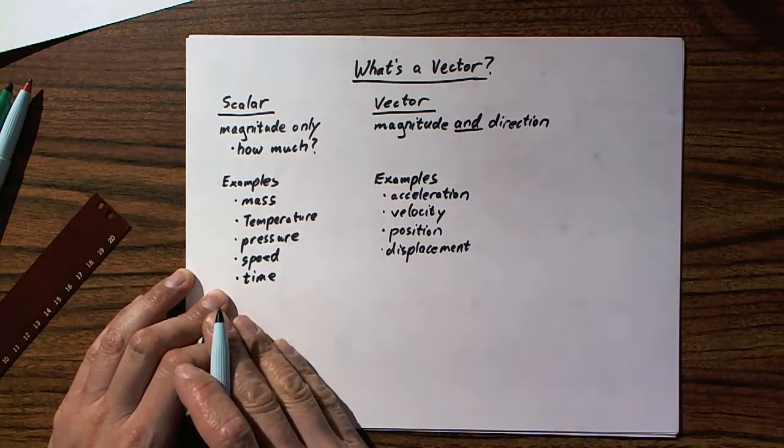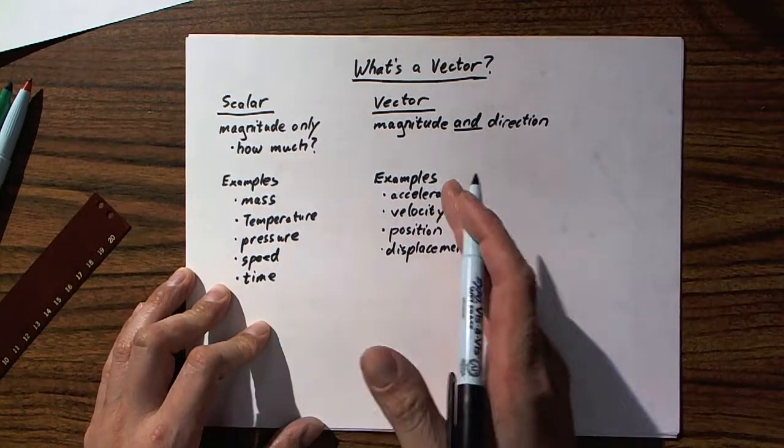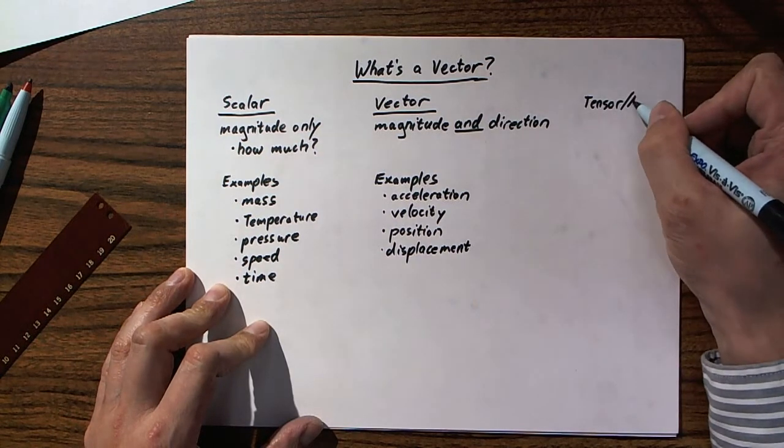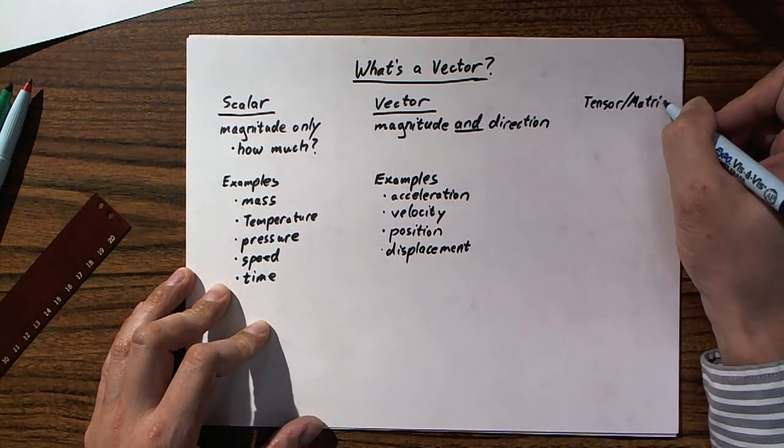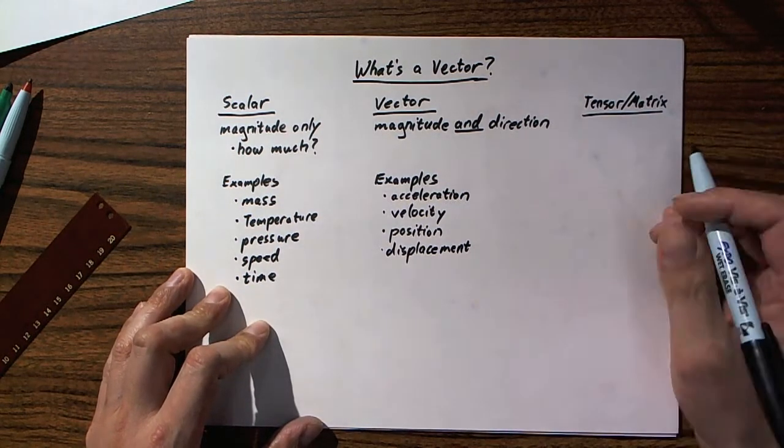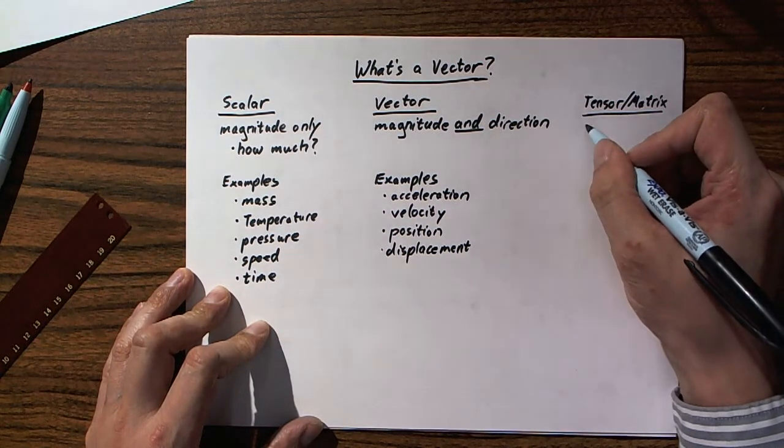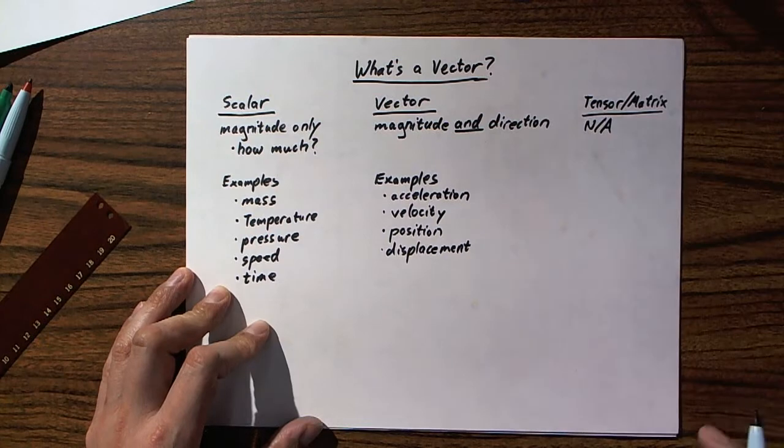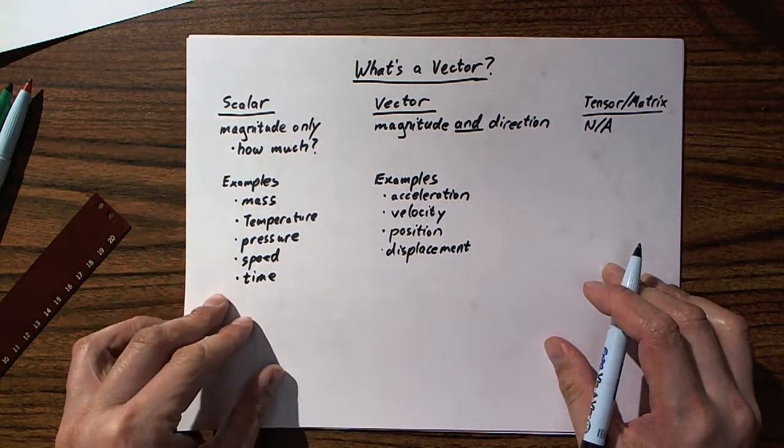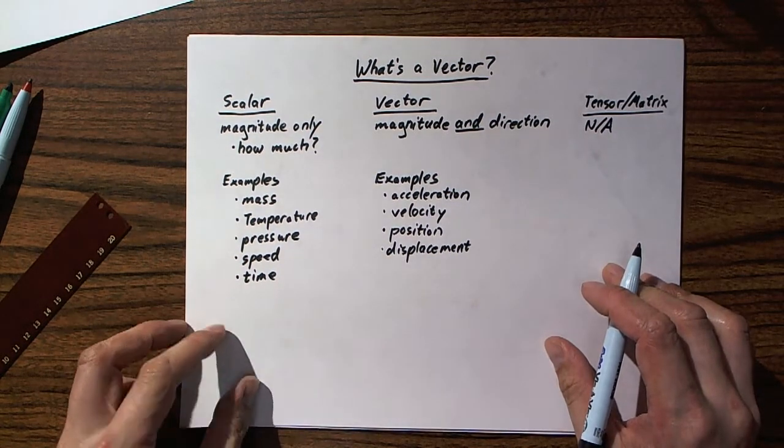Now, just so that you don't get too many surprises if you go onto an engineering program in college, there is a third type of quantity. It's called a tensor or matrix, and that's complicated, and you don't need tensors or matrices for this class. So, let's just say not applicable over there. But, it is a third way to describe certain quantities, certain particularly complicated quantities.